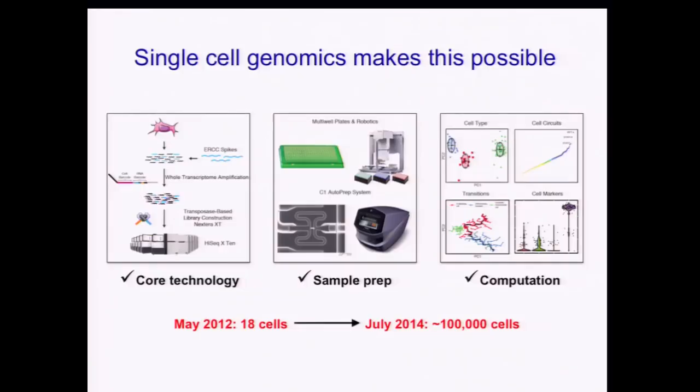Just based on numbers from the Broad, where I am: in May 2012 we had 18 cells profiled, and by now we have profiled about 100,000 cells. Very importantly, we're also making very quick advances in critical additional capabilities that will bring us the right scale and resolution.